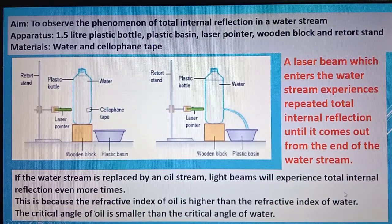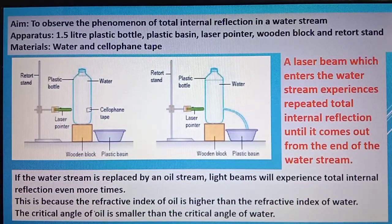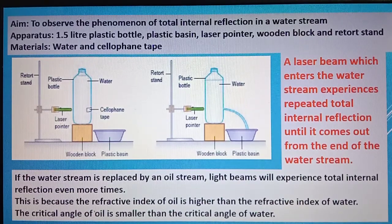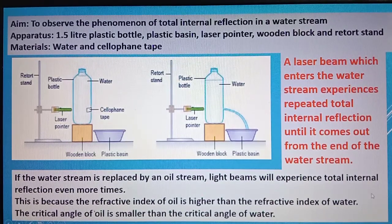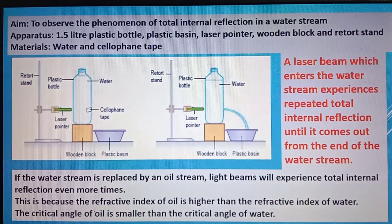To summarize this part: Total Internal Reflection is a phenomenon that occurs when light travels from a denser to a less dense medium and the angle of incidence is greater than the critical angle. You can search online for more videos on these activities. Continue in part 2, and don't forget to subscribe so you won't miss the next video.